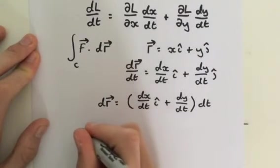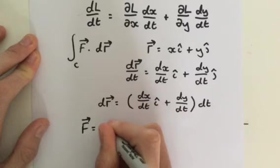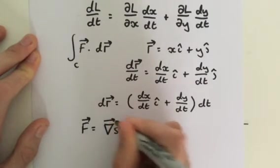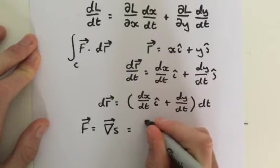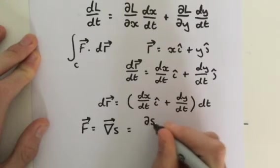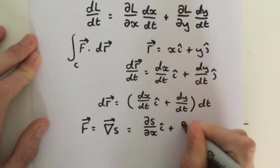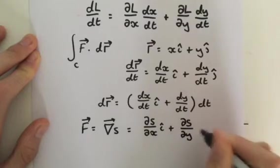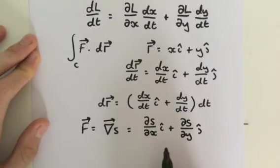So F, I'll write it again. F is equal to del S. Now, we should know that the gradient is calculated by this. It is the partial of S with respect to x times i plus the partial of S with respect to y times j. That is the gradient.